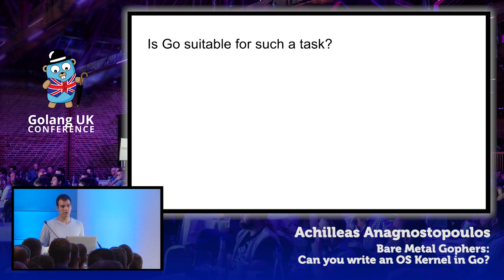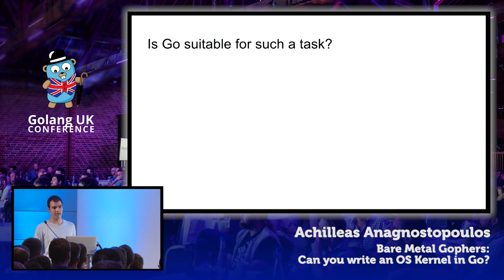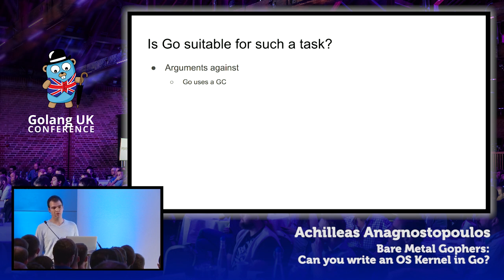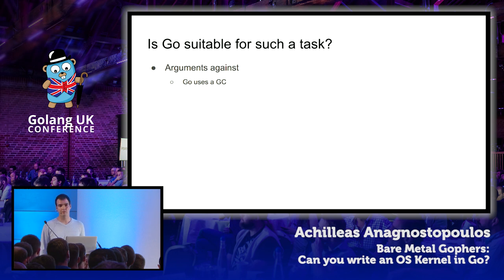Is Go a suitable tool for such a task? There's been controversy about whether we should rewrite OS kernels in safer languages like Go or Rust instead of C or C++. If you mentioned building a kernel in Go, the first reaction would probably be: Go uses a garbage collector, and you shouldn't use a garbage-collected language to write real-time code. While a garbage collector could be a bottleneck, Go's GC implementation is quite performant compared to other languages and gets faster with each new release, so this isn't really something to worry about.